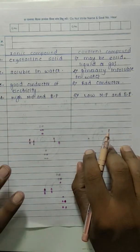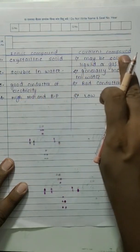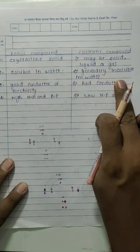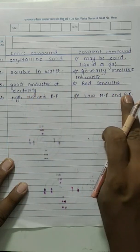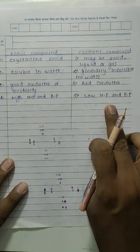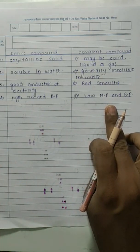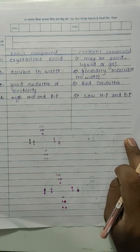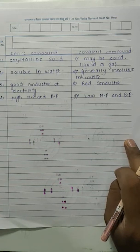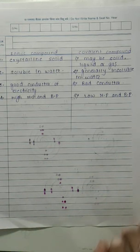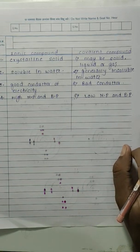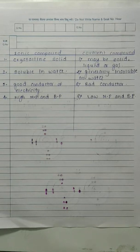So the difference between ionic and covalent compounds: ionic — crystalline solid; covalent — may be solid, liquid, or gas. Ionic — soluble in water; covalent — generally insoluble. Ionic — good conductor; covalent — bad conductor. Ionic — high melting and boiling point; covalent — low melting and boiling point. The metals and non-metals content is mostly done. The bonding topic will continue in class as board-oriented questions need to be explained on the board. Hopefully from the next lecture we will start a new chapter.